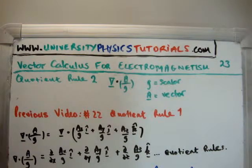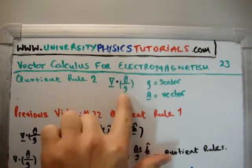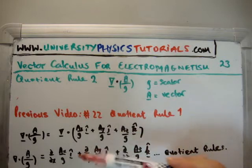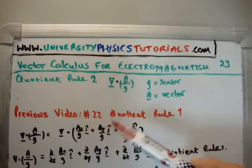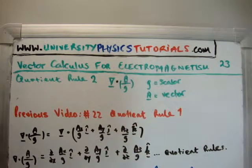So in this video, we're going to take the divergence of a vector field. The vector field is the vector A divided by the scalar g. So that's pretty straightforward, because we can write down the vector A divided by the scalar g as a sub x divided by g in the i-hat direction, a sub y divided by g in the j-hat direction, and a sub z divided by g in the k-hat direction.